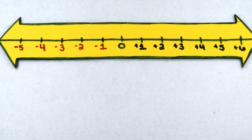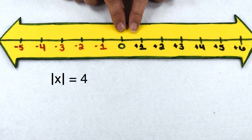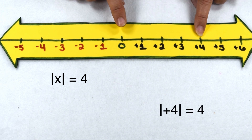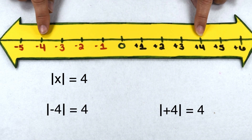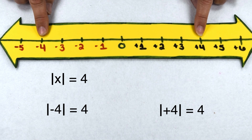We can also reverse the question and ask which numbers have a specific absolute value. For example, we could ask which numbers have an absolute value of four. This would have two solutions: positive four would be four places from zero and negative four would be four places from zero. So the values that have an absolute value of four would be the number and its opposite.